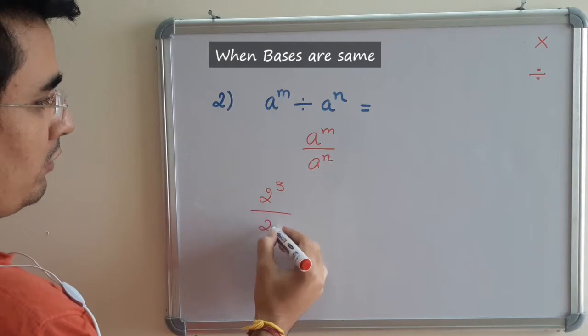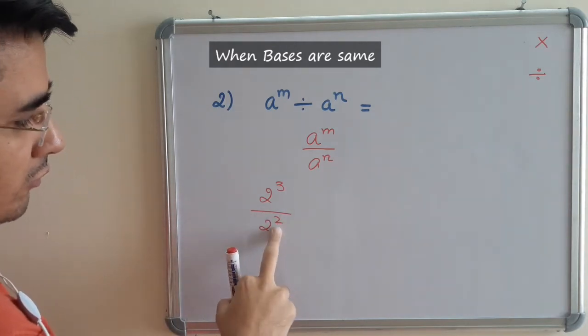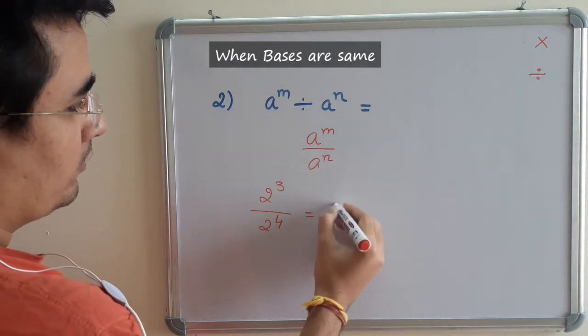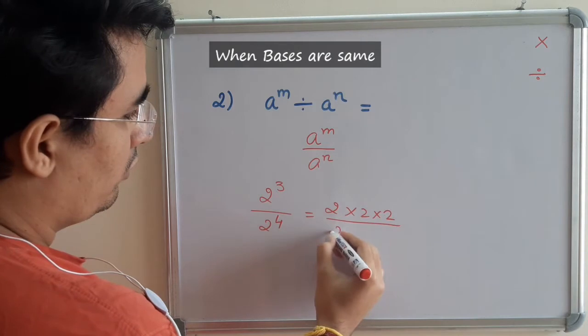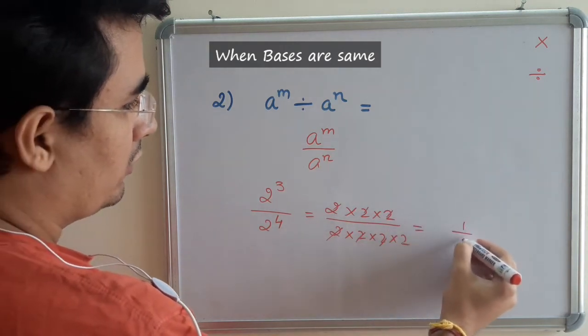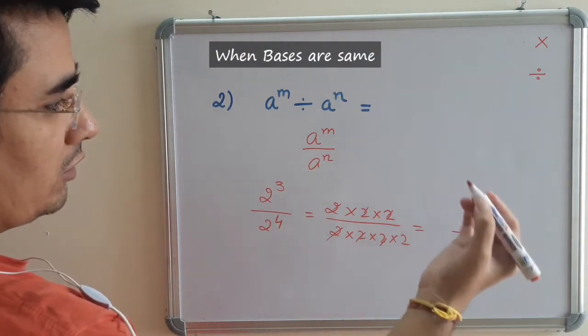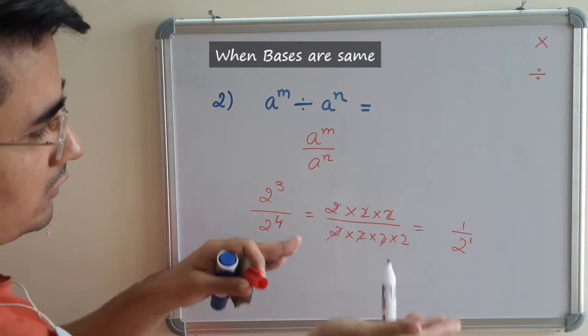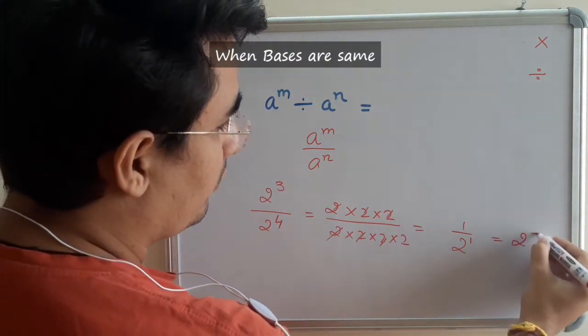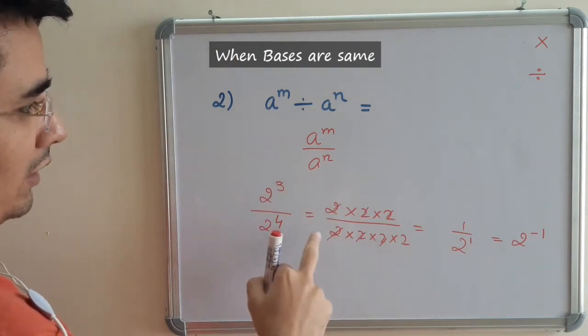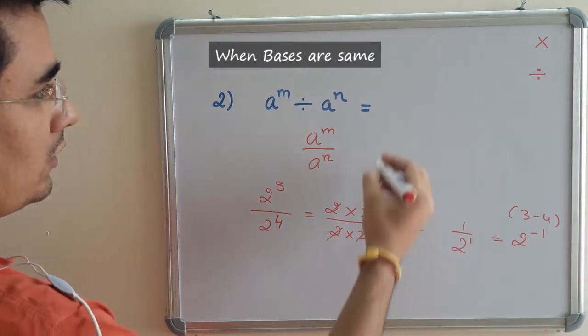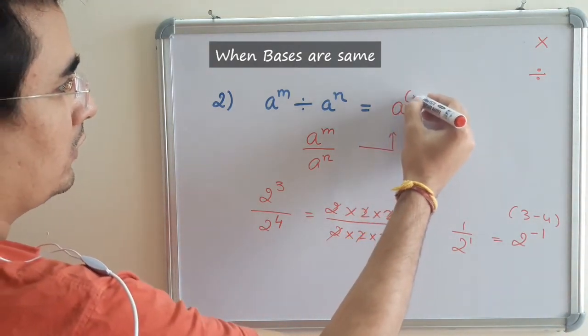2^3 upon 2^2. It can be higher also, it can be 4 also, but that will be negative. Let's see one more law. So it becomes (2 × 2 × 2 × 2) upon (2 × 2 × 2 × 2). So 2 and 2 get cancelled, and we are left with 1 over 2, basically 1 over 2^1. At the end we want to take the answer in numerator. Let us try to understand what is happening. So it will come to be 2^(-1). Basically we are subtracting 3 and 4: 3 minus 4 is 1.